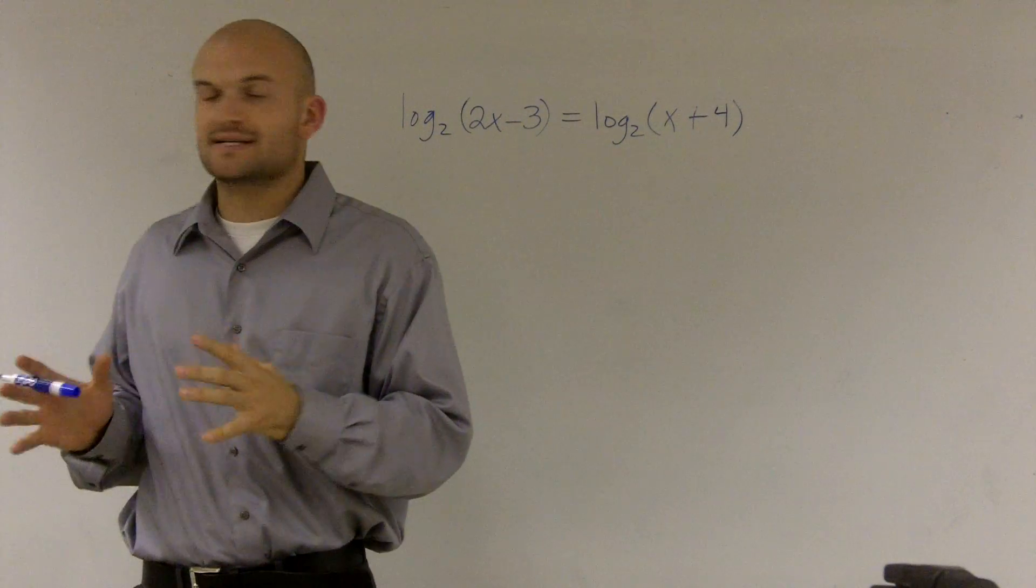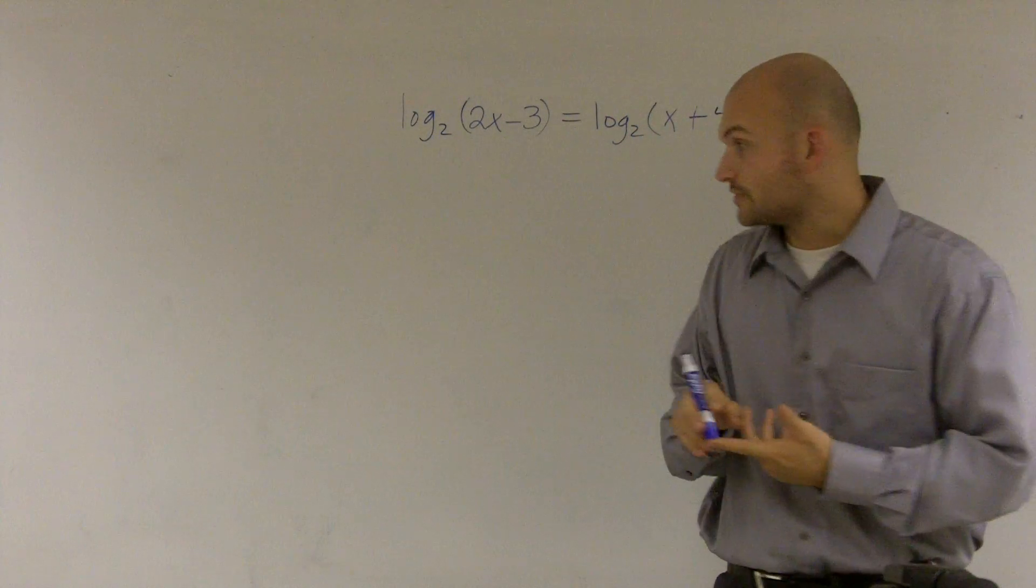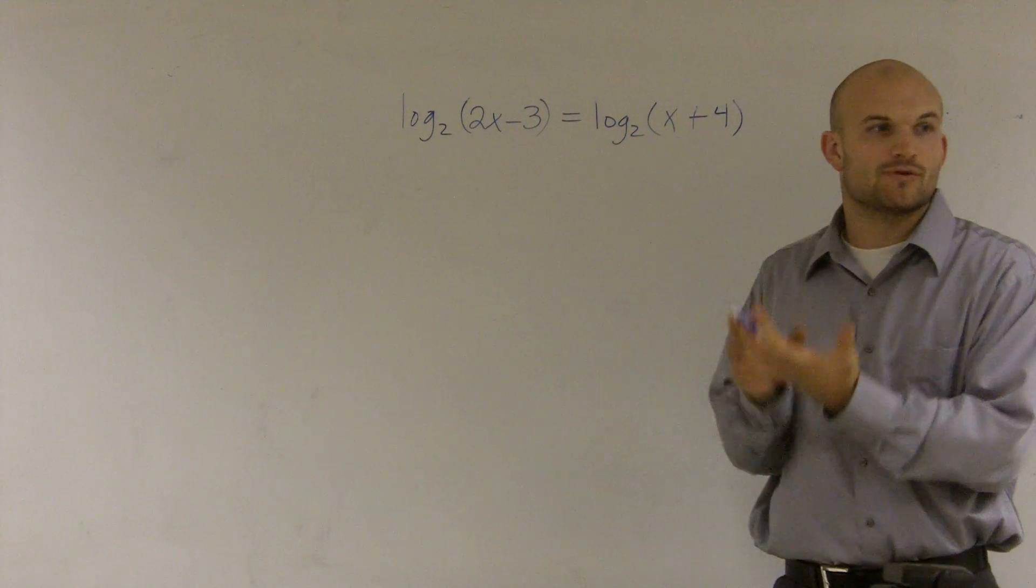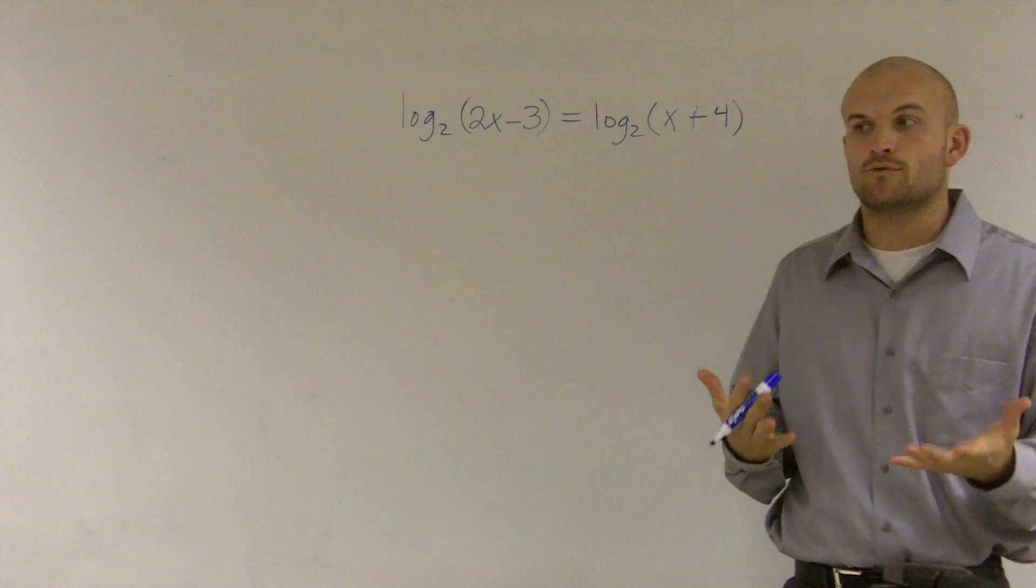When we have a logarithm on both sides, a couple things we've looked at - one thing is we can condense our logarithms, and that will help us get to one single logarithm. However, when we have them on the same side, what we can use is our one-to-one property.